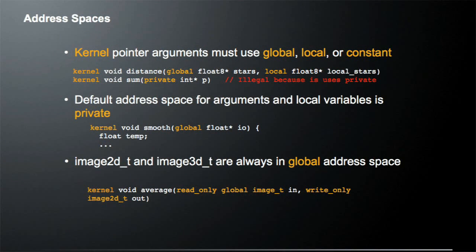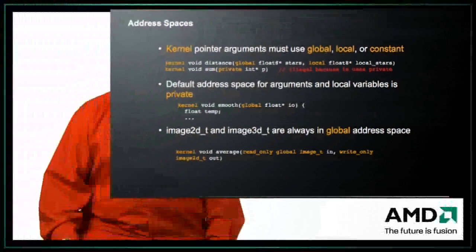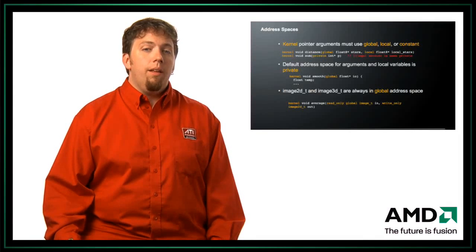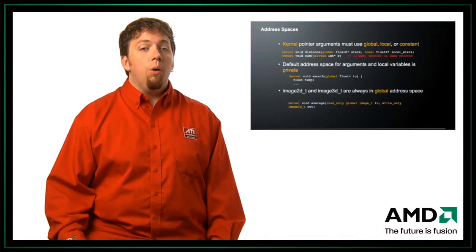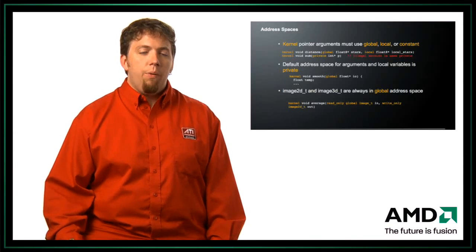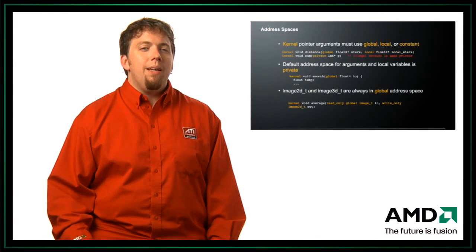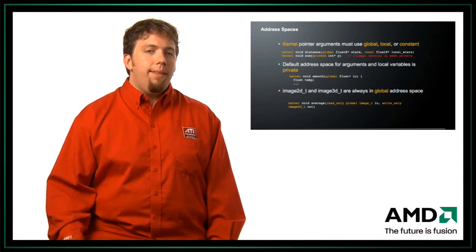There are several different address spaces in OpenCL and it's quite important which one you're using. Kernel pointer arguments must use global, local, or constant — they cannot use private pointers, because private memory is dedicated to a single work item. For example, declaring a kernel with a private pointer argument is illegal. A common gotcha is that the default address space for arguments and local variables is private, so if you don't specify a memory space, it defaults to private and bad things happen.